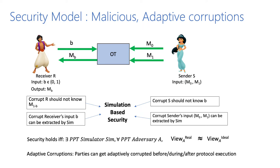We also consider adaptive security, which is the strongest security model. In this setting, the adversary can adaptively corrupt any of the honest parties before, during, or after protocol execution. The adversary obtains the internal state of the honest party upon corruption. In such a case, the simulated honest party's view has to be opened consistently to the honest party's input when the party gets corrupted in the ideal world. That is non-trivial and really hard to achieve, and that is the focus of our paper. We also consider malicious corruptions, where the corrupt party can arbitrarily deviate from the protocol.